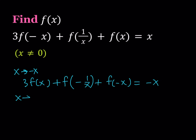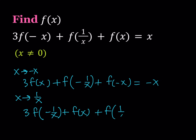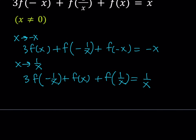Next, I'm going to replace x with 1 over x, and that should give me something like this: 3 times f of negative 1 over x plus — if I replace x with 1 over x, 1 over 1 over x is just going to be f of x — and then plus f of 1 over x equals 1 over x, since I'm replacing x with 1 over x.